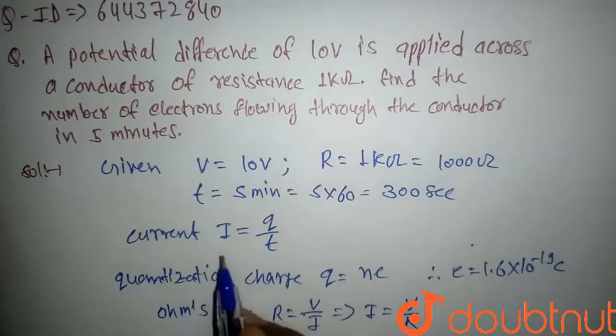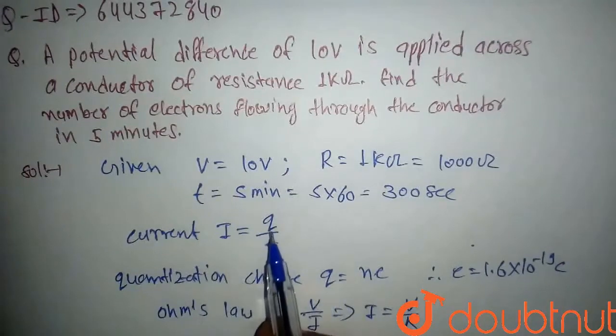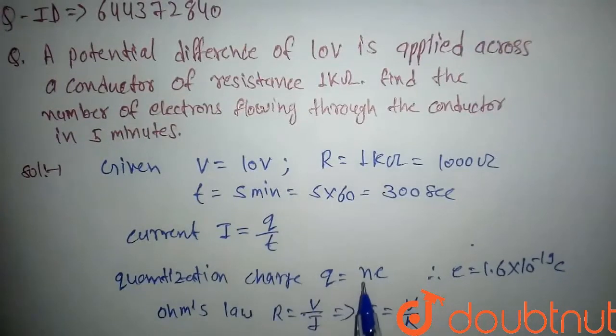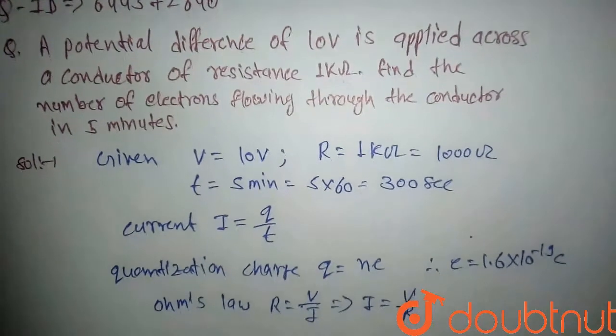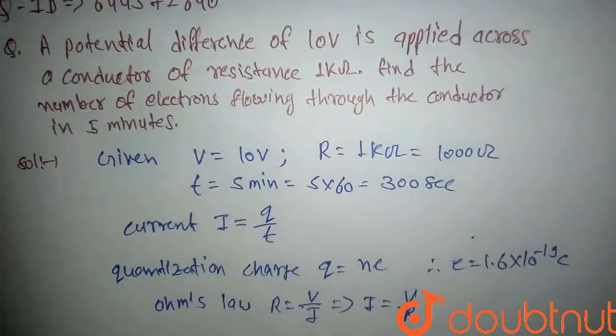So if we put the value of I here, and we will put the value of charge Q here, we can find the value of n. Here, n is the number of electrons.